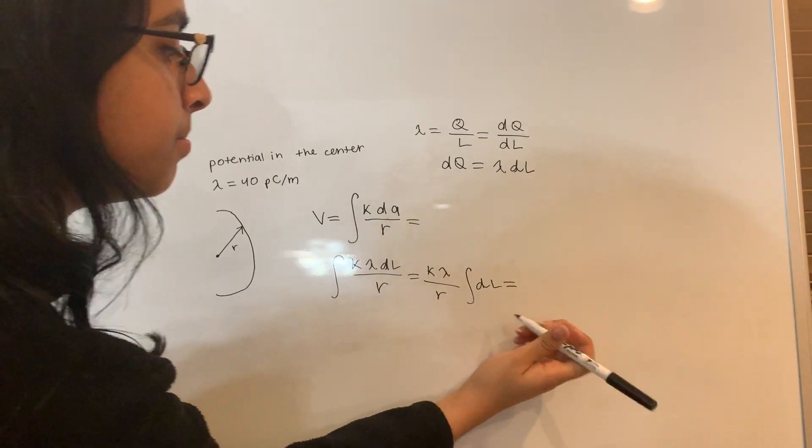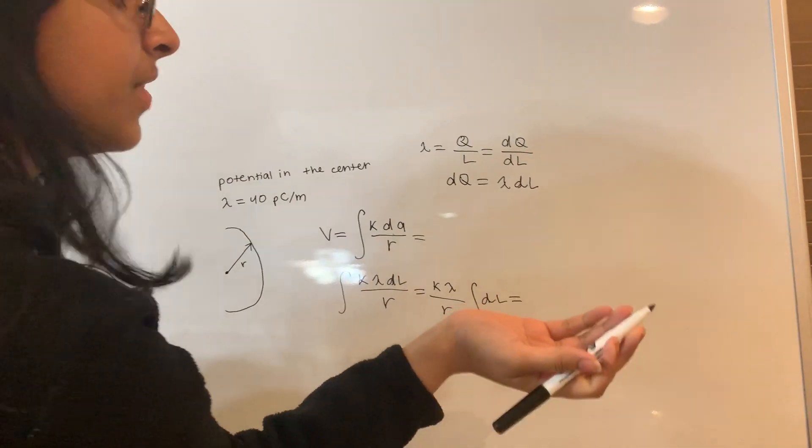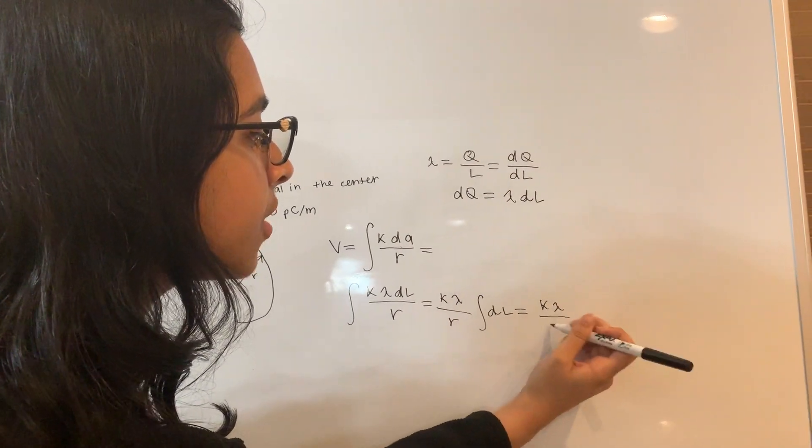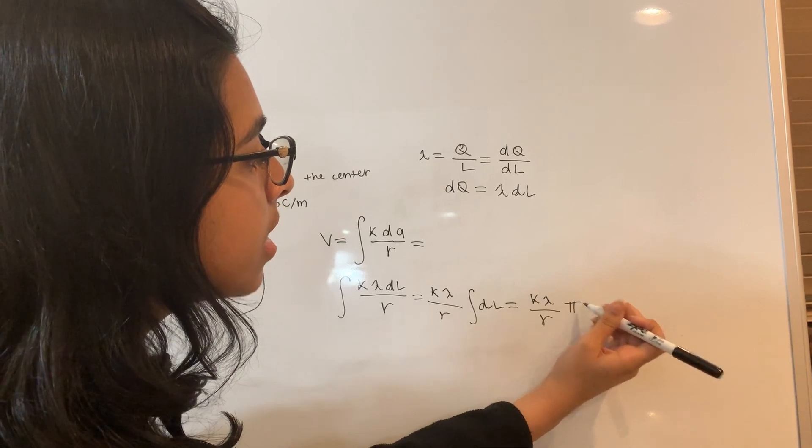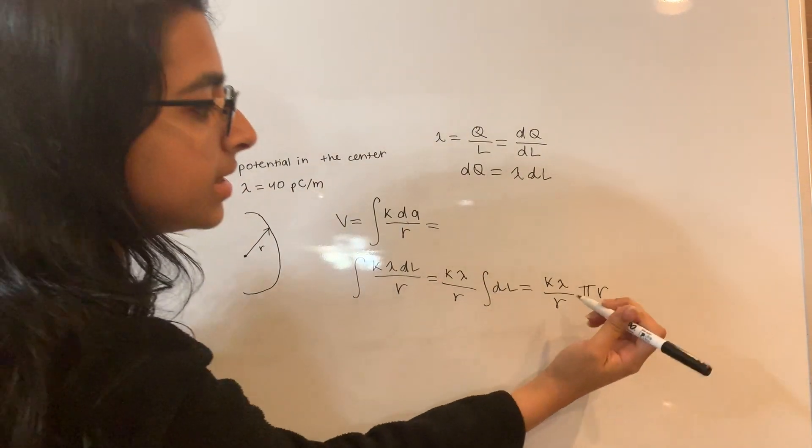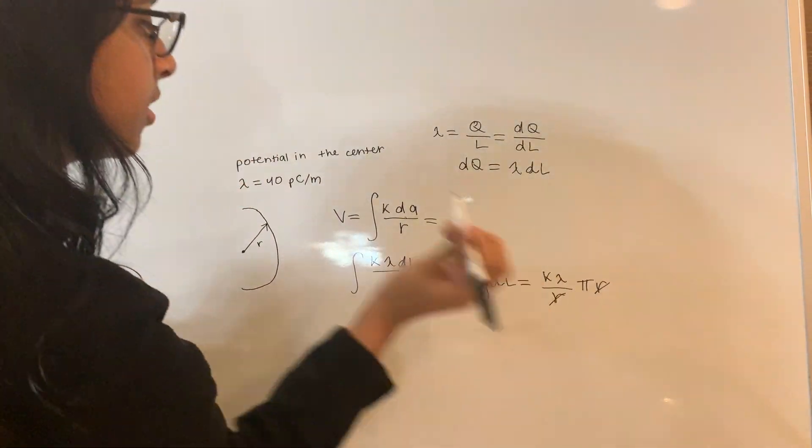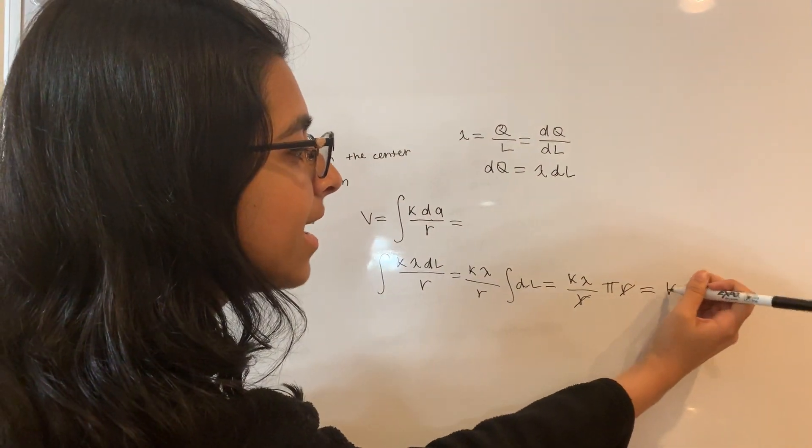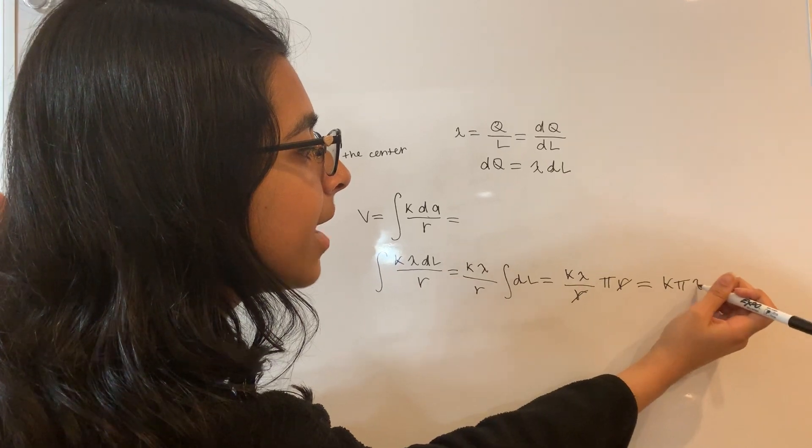The integral of dl is going to equal pi r. So k lambda over r times pi r. And we notice that the r's cancel, which is good because we're not given an r in this problem. So the final formula that we're going to use is just k pi lambda.